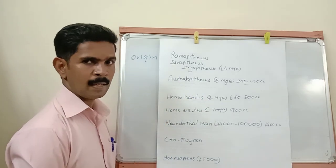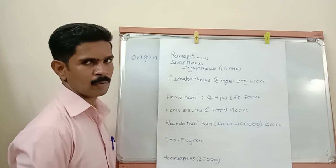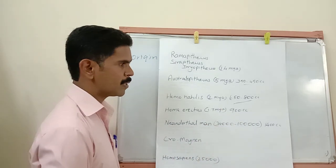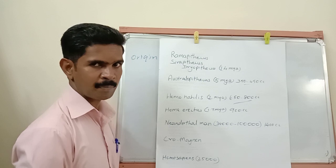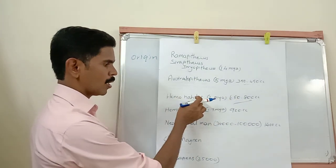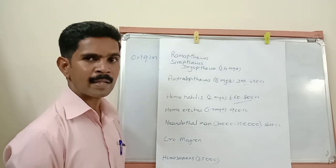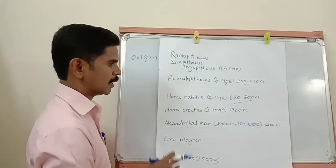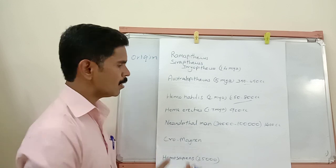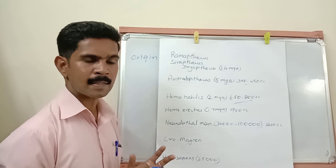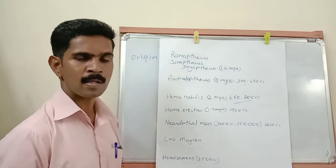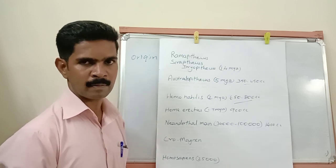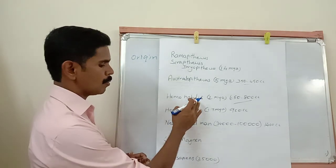Next is Homo Habilis. They were lived in the world 2 million years ago, and their brain capacity is 650 to 800 cc. They were mostly vegetarian, used bipedal locomotion, and one special character is that they used tools — mainly sharp stones as weapons.